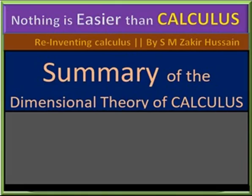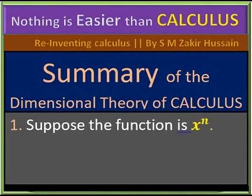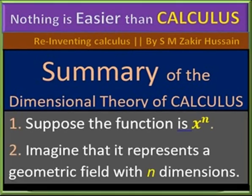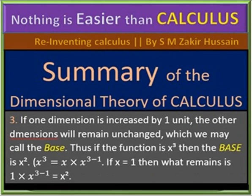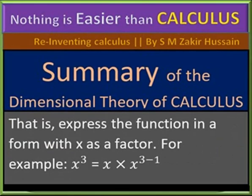Now here is the summary of the new approach to calculus. Suppose that you have a function, x to the n. Imagine that the function represents a geometric field with n dimensions, so that when one dimension is increased by one unit, the other dimensions will remain unchanged. The field comprising these other dimensions may be called the base. Thus, if the function is x cubed, then the base is x squared. That is, break down the function into two factors, one of them being x. For example, if the function is x cubed, then we'll have x squared times x. Here x squared is the base, and x is the factor for which we'll use the value of 1 to show unit change.